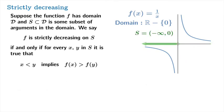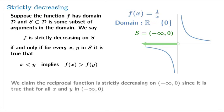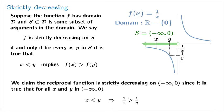We could also choose s to be the open interval from negative infinity to 0. Once again, we claim the reciprocal function is strictly decreasing on this set, since it is true that whenever you choose arguments x and y with x less than y, 1 over x is greater than 1 over y. So the reciprocal function is strictly decreasing on this open interval as well.